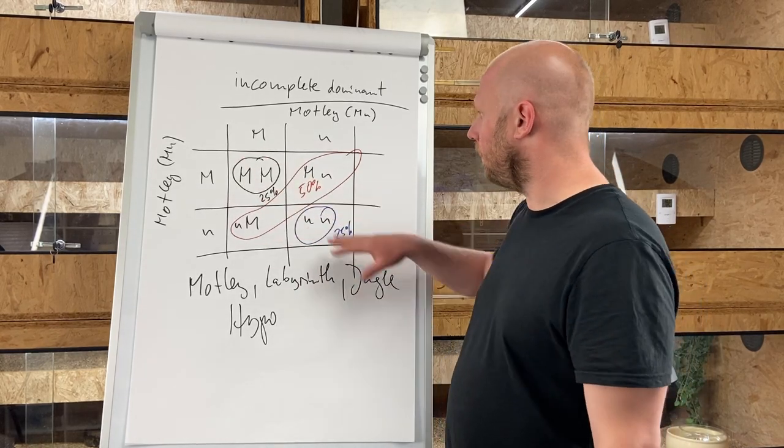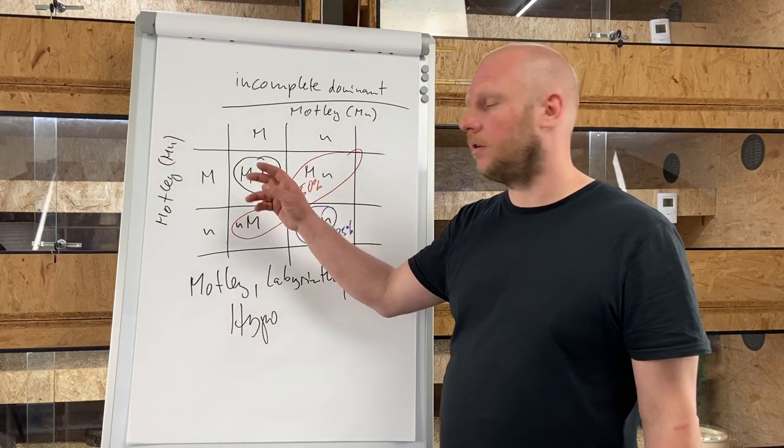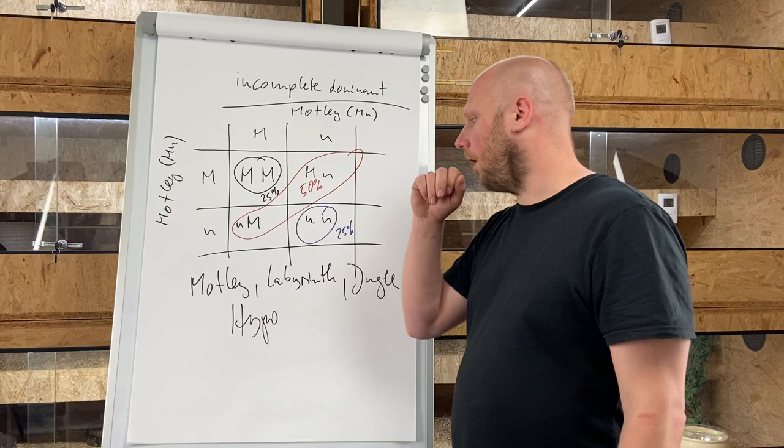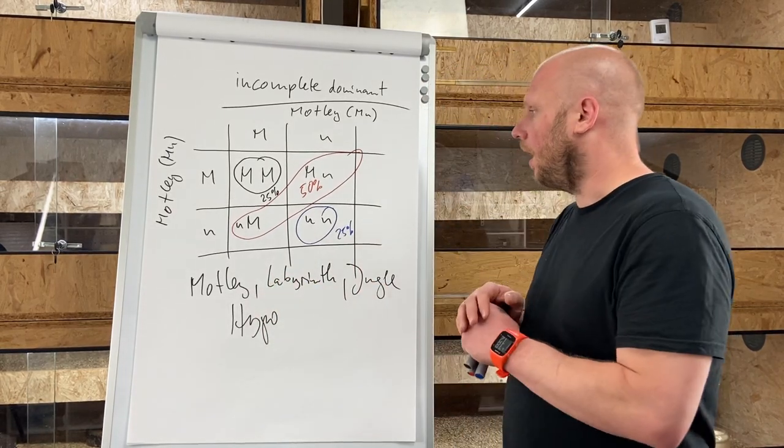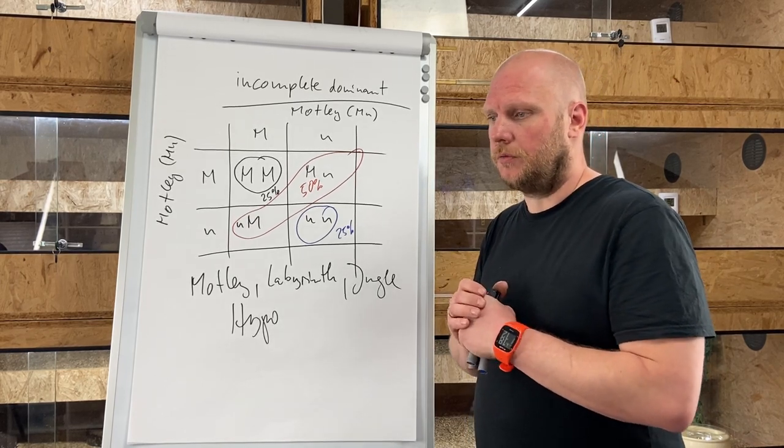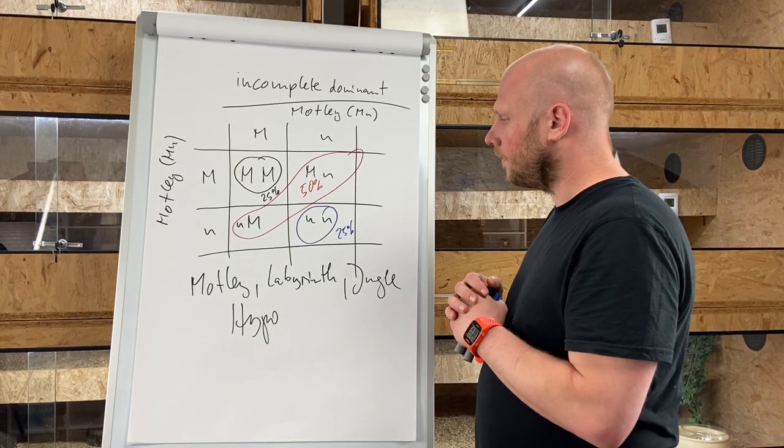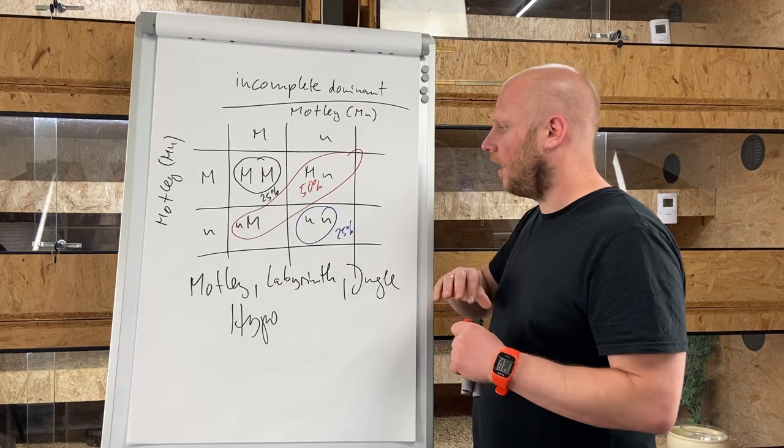The same is also for labyrinth or for jungle, so you are receiving super jungle or super hypo. I also have done a video about how to identify a super hypo when we checked out our VPI snow glow litter. And that's how it works for all of these morphs.